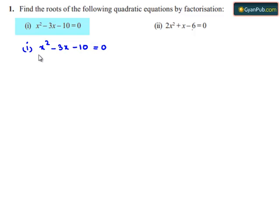The product of the first term and the last term is minus 10x square. We need to find the factors of minus 10x square such that their sum is minus 3x.